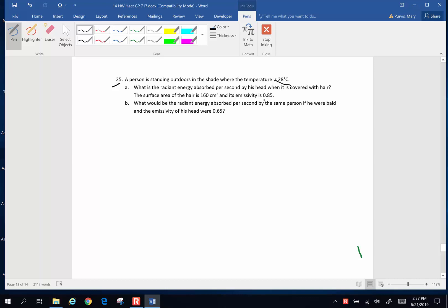Anytime it says an emissivity you know that you are going to be using that thermal radiation equation that says emissivity times Stefan Boltzmann constant, surface area, times temperature raised to the fourth power. Now we want to know what is the energy absorbed per second and that is what this says. Q over T is energy per second.